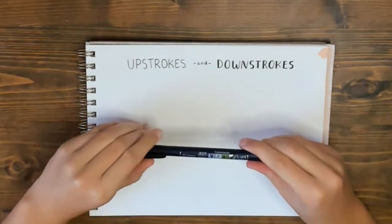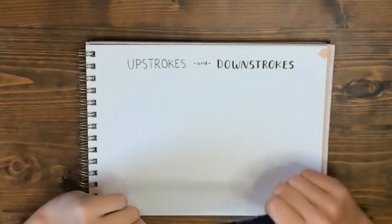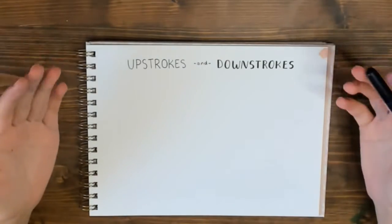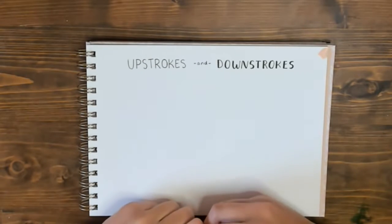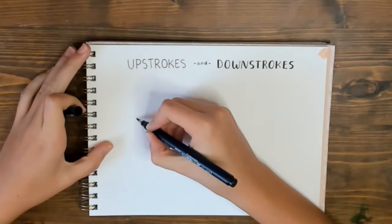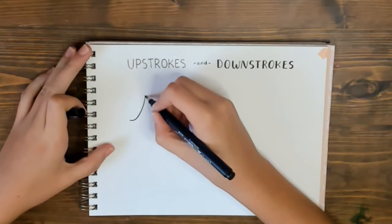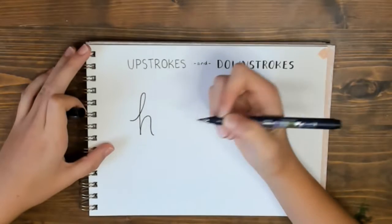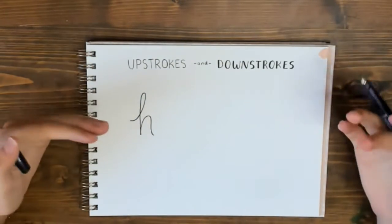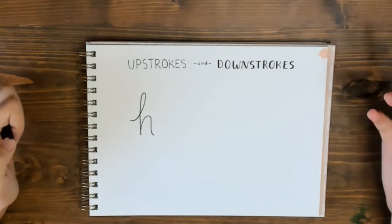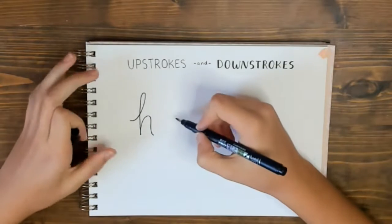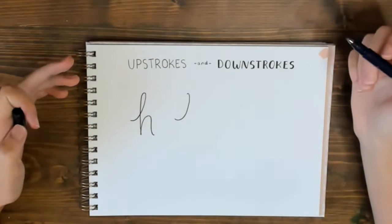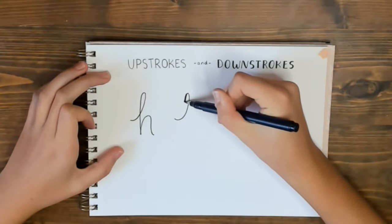Now I have my Tombow Fudenoski brush pen and we're going to talk about upstrokes and downstrokes. The first thing you learn when you're learning calligraphy is about upstrokes and downstrokes. What that means is: whenever your pen goes up, it's an upstroke, and whenever it comes down, it's a downstroke. That would be like an H in cursive, but in calligraphy you embellish your downstrokes. So the first line we draw is an upstroke — it's normal — but then in calligraphy, you're going to add pressure to your downstrokes.